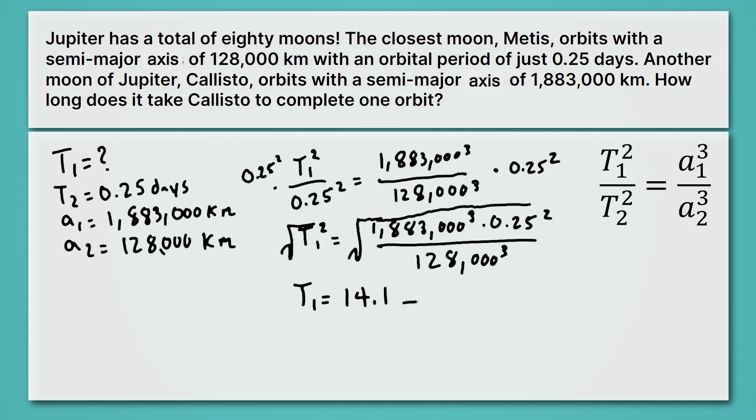which will round to just two sig figs, because our orbital period is 0.25, that has one, two sig figs. So we'll get 14. Now, what are the units here? Well, the units for orbital period that we put in were days, and so the units for orbital period that come out will also be days. Those are always going to match. And so what we found out is that this really far away moon takes 14 days to get all the way around Jupiter.